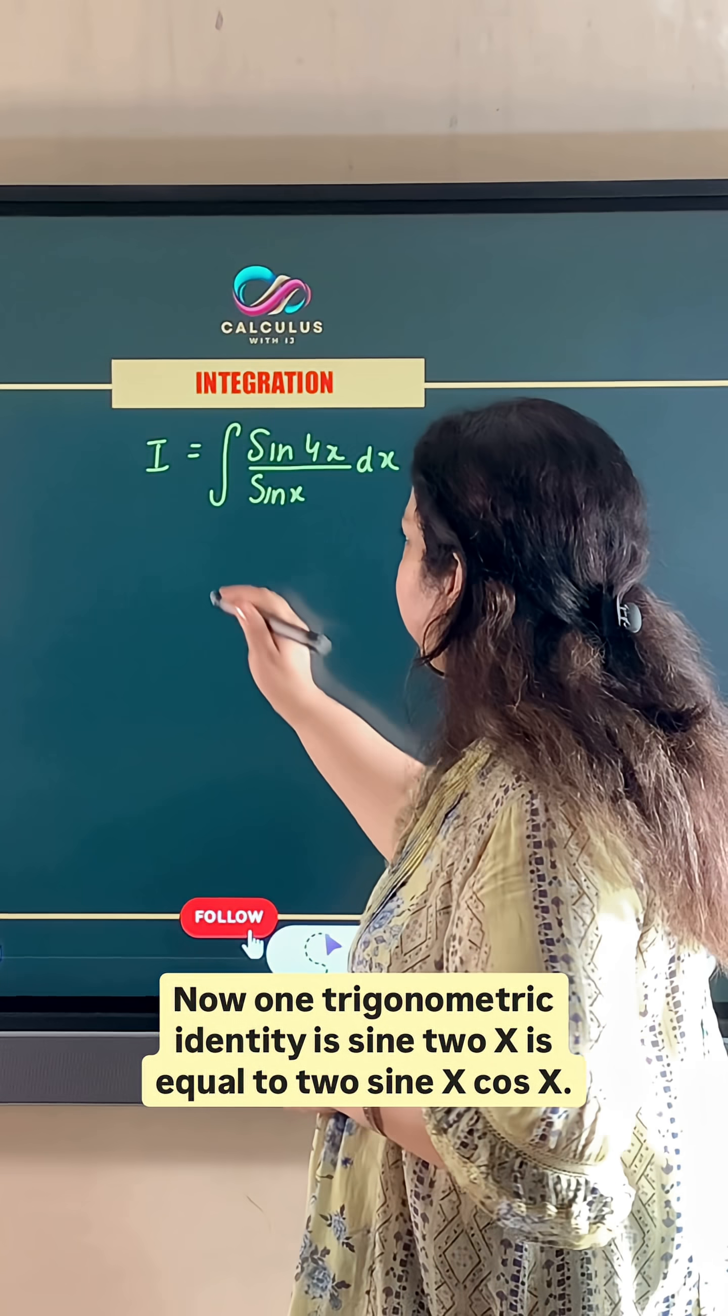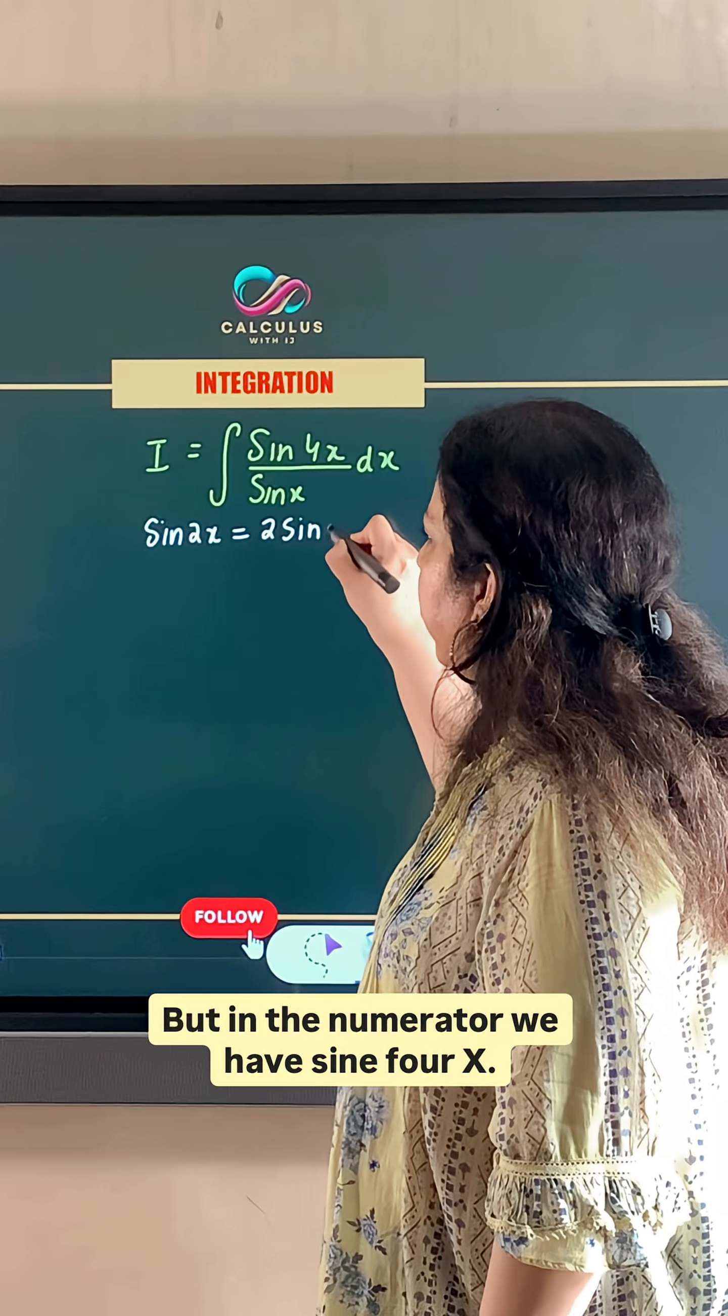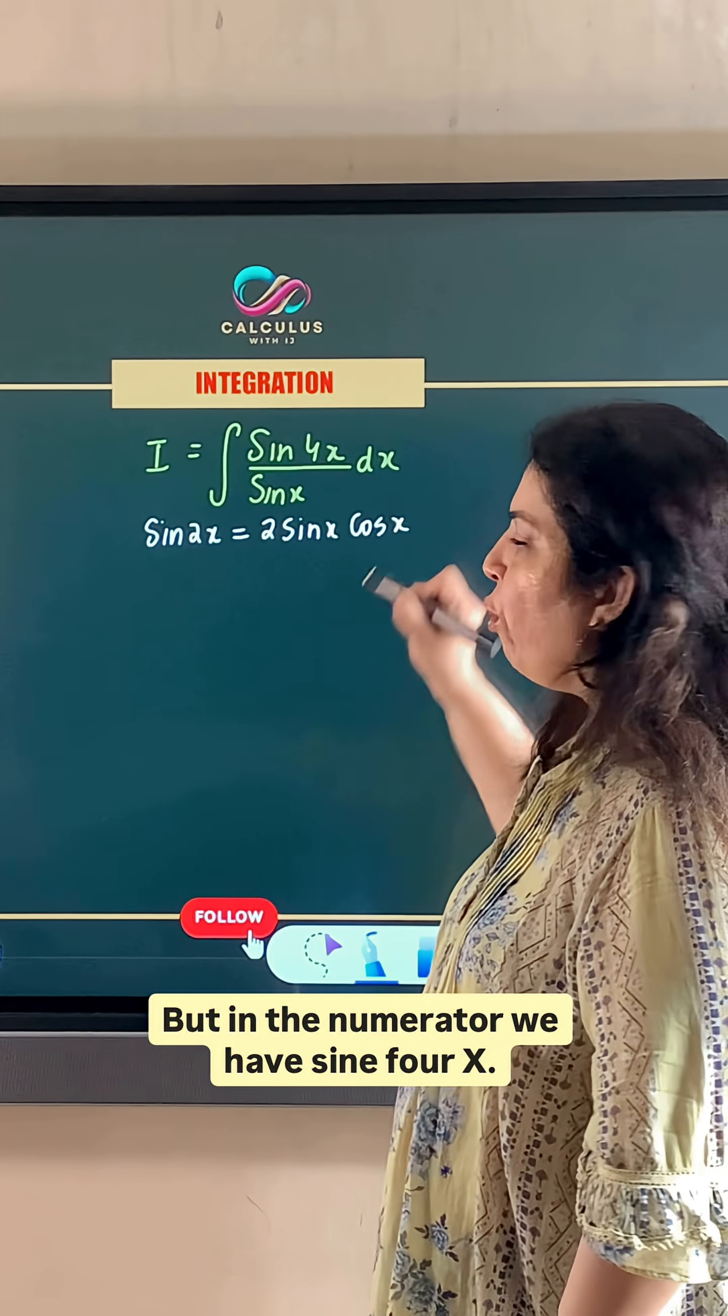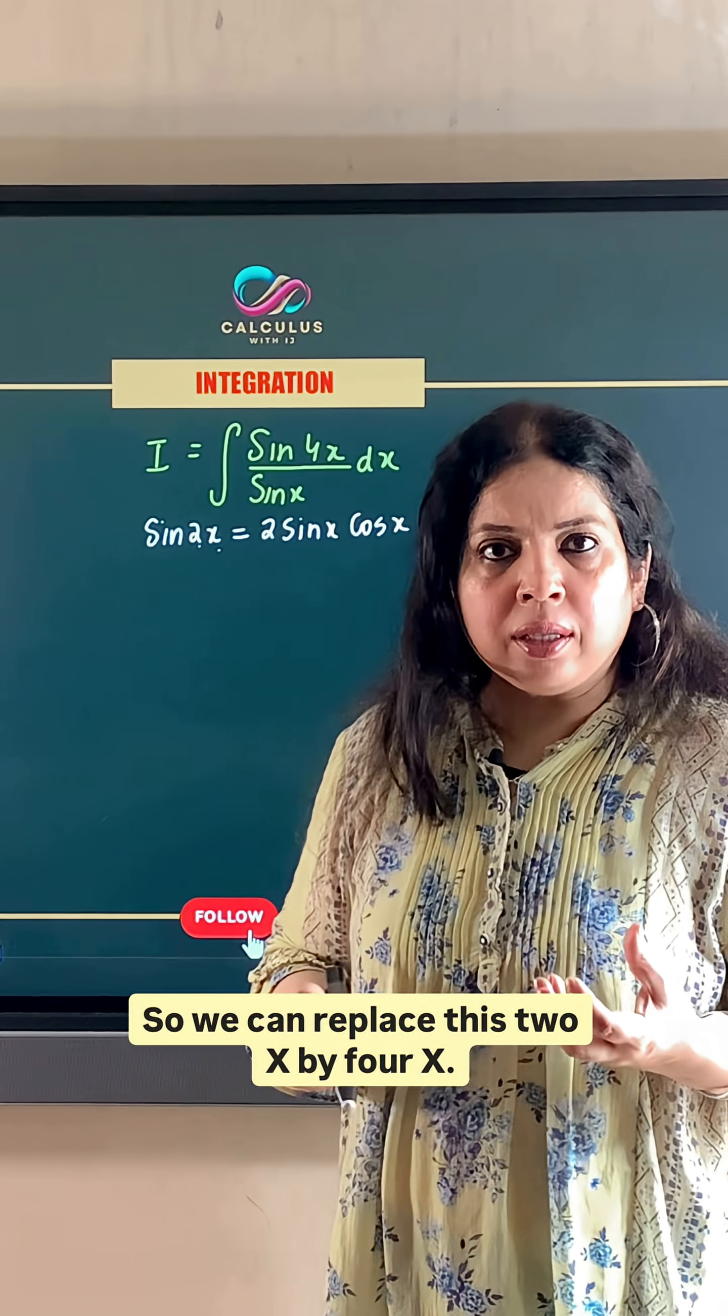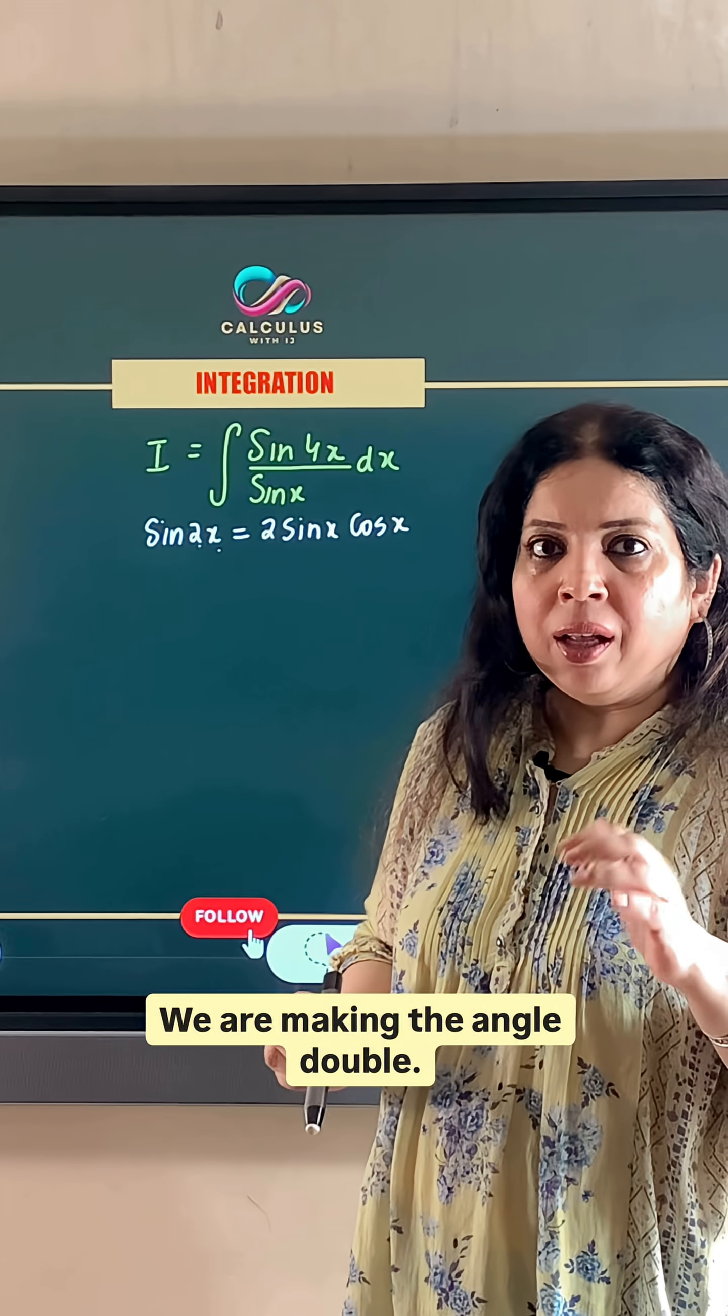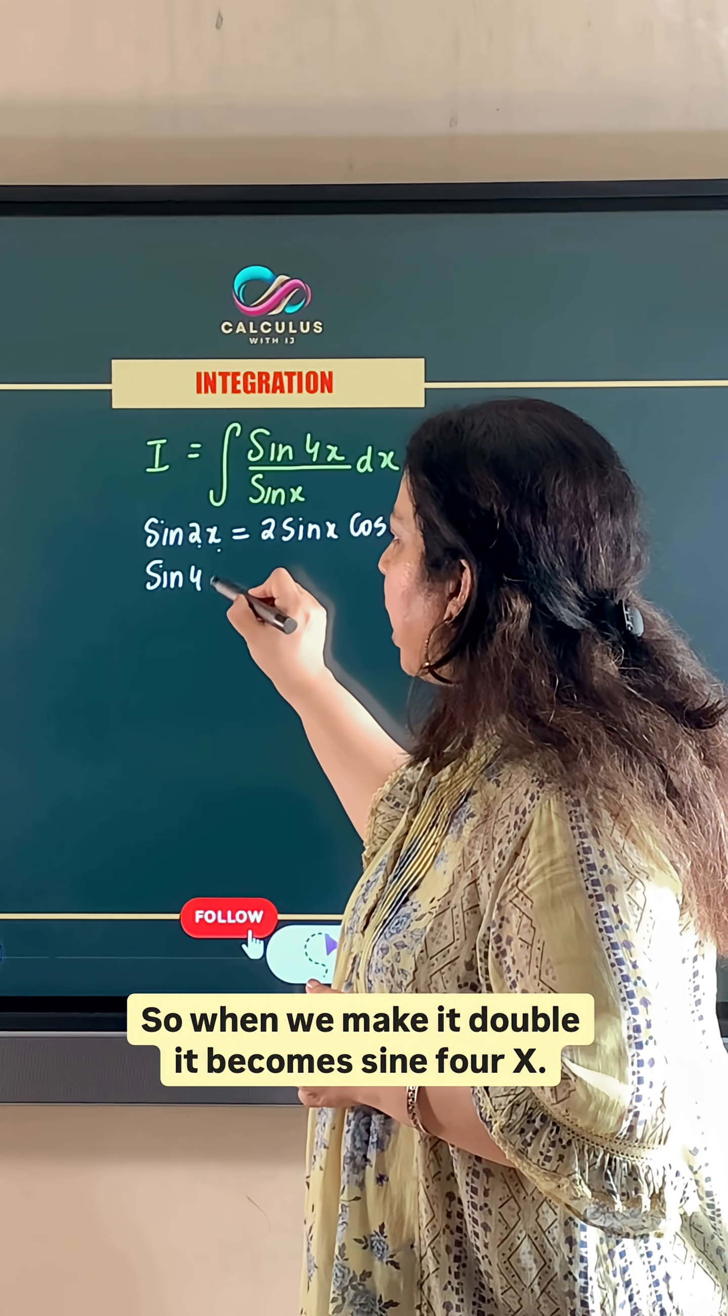Now, one trigonometric identity is sin 2x is equal to 2 sin x cos x. But in the numerator, we have sin 4x. So we can replace this 2x by 4x. That means we are multiplying the angle by 2. We are making the angle double. So when we make it double, it becomes sin 4x.